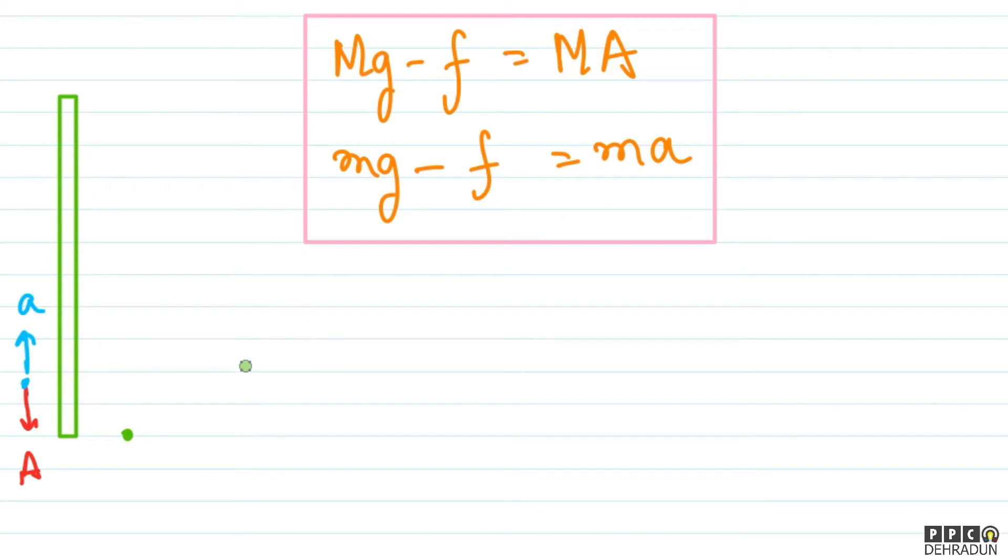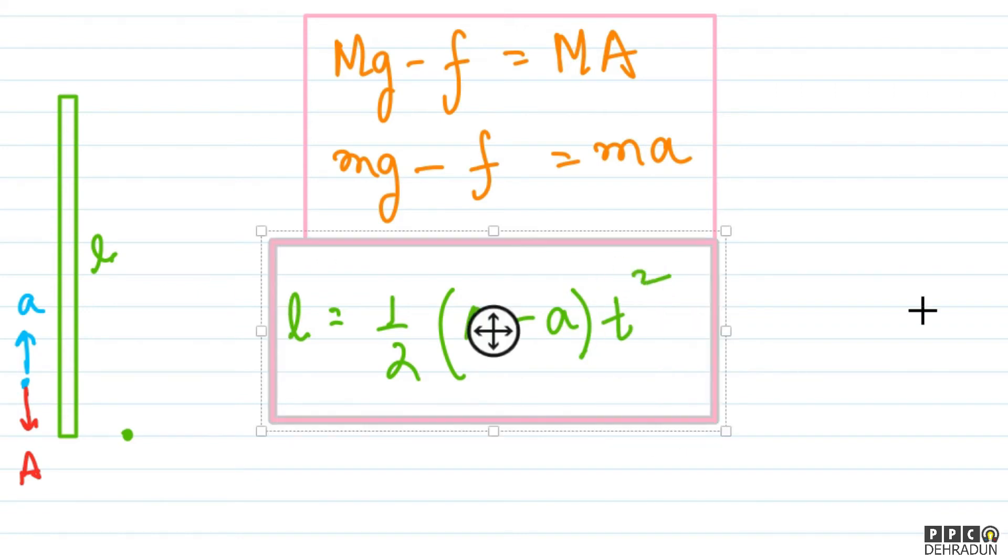So we're given time that after time t, the lower end went down so much that the upper end came exactly opposite this ball. As given in the question, the rod's length is L. So we can say that initial velocity u was zero, so we can say L equals - we'll use S equals ut plus half at squared. So we simply write, taking downward direction as positive, L equals half times acceleration capital A minus small a times t squared. So see, another equation has come to us.